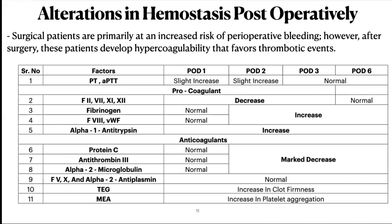Surgical patients are primarily at increased risk of perioperative bleeding. However, after surgery, patients develop hypercoagulability that favors pro-thrombotic events. In a study, blood samples were taken pre-operatively and on post-operative days 1, 2, 3, and 6. In addition to PT and aPTT, PT-dependent clotting factors, fibrinogen, and other factors were obtained. Thromboelastometry and multiplate impedance aggregometry were also obtained.